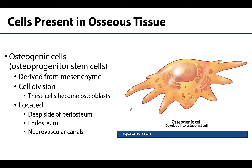There are going to be four types of cells present in osseous tissue, and we are going to review each one, starting with the osteogenic cells. Sometimes you hear these referred to as the osteoprogenitor stem cells, because that's exactly what they are — unspecialized bone stem cells. Osteogenic cells are derived from mesenchyme, which is the embryonic tissue from which almost all connective tissues are formed.